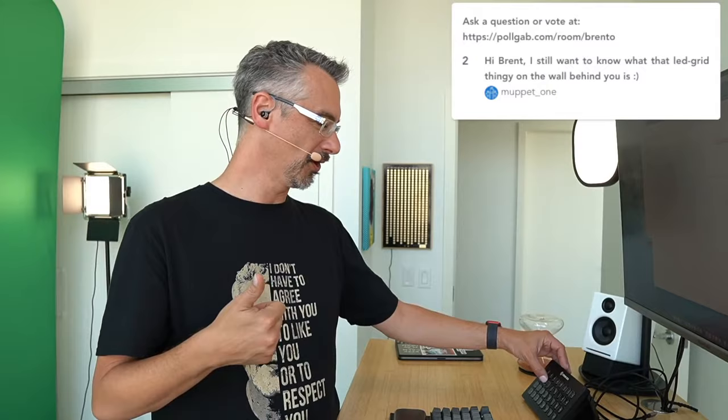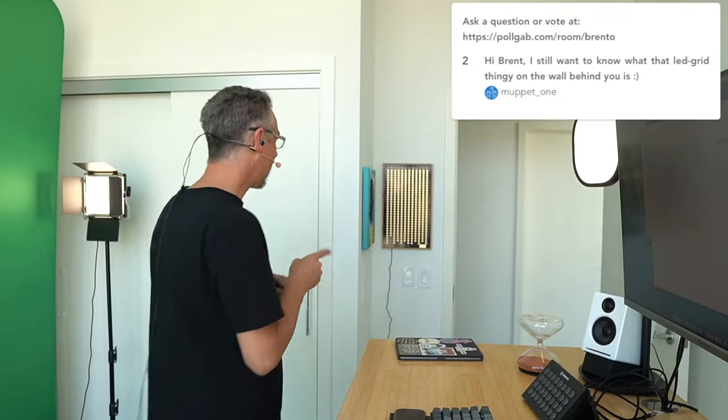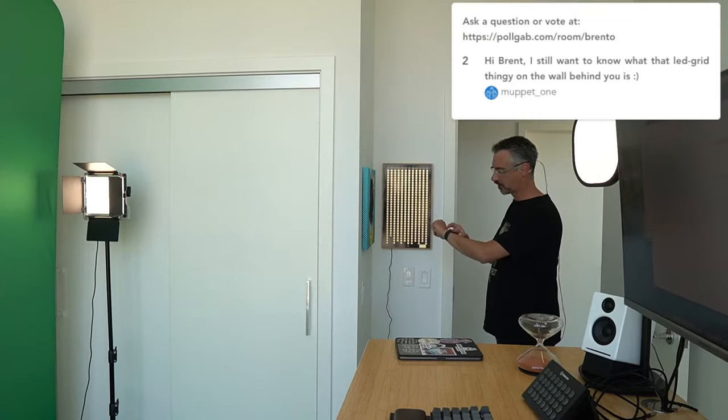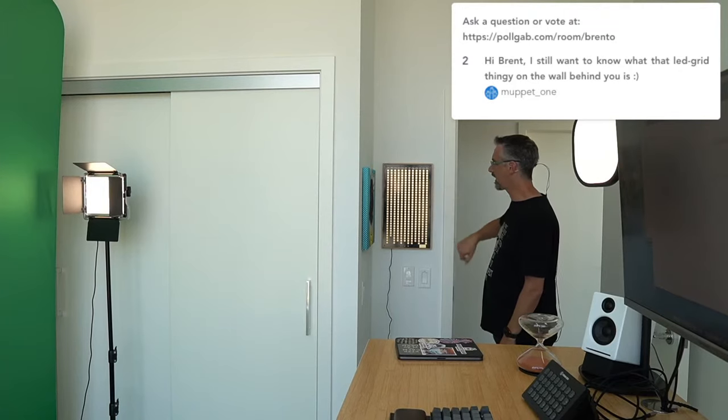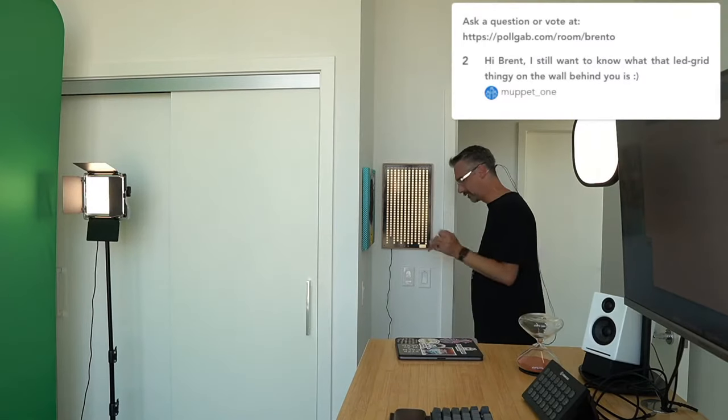Muppet One asks: what is that LED grid thingy on the wall behind you? That is Simone Giertz's Everyday Calendar. Every day that I do what I'm supposed to do, I touch it and it lights up — works really well at night and stays lit up. She's the queen of crappy robots, built her own Tesla truck, and did this really cool everyday calendar. It's in the Museum of Modern Art now, which is kind of neat. I got one of the first hundred — her little signature is down here, number 81.